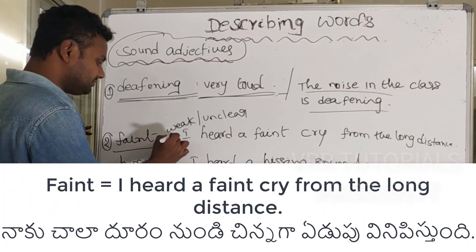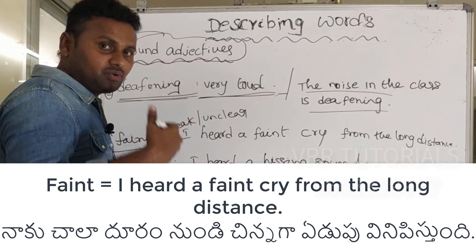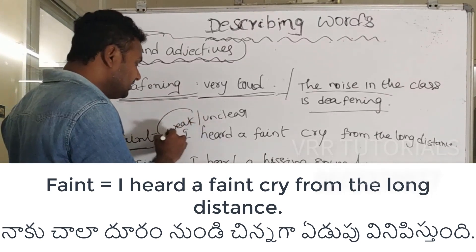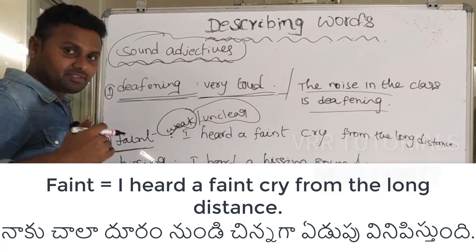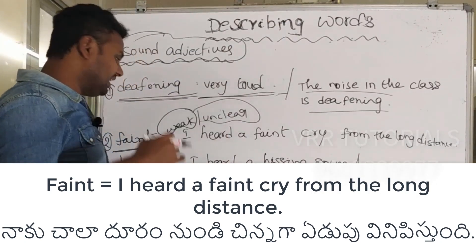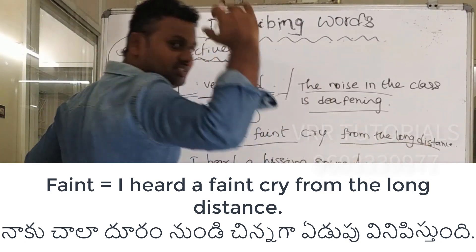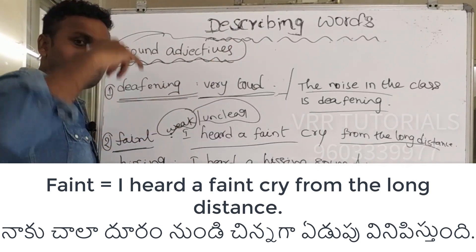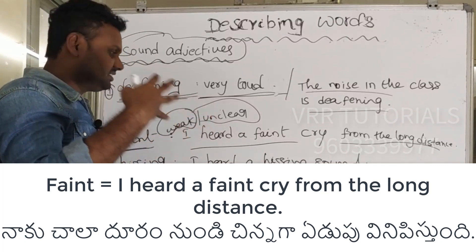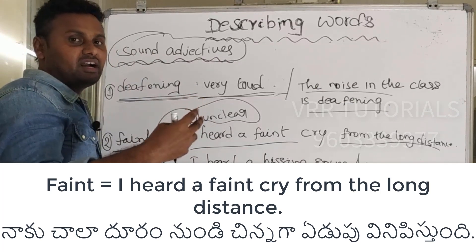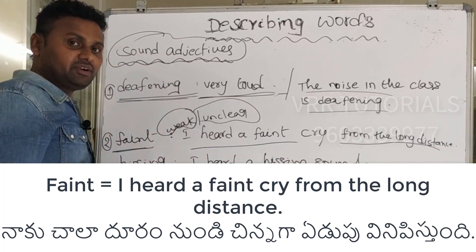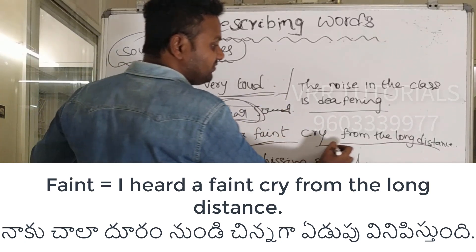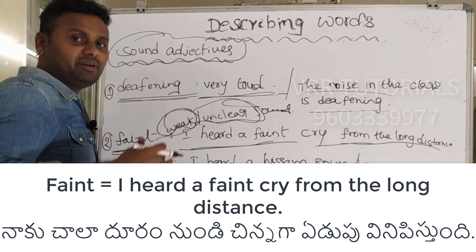The next one is 'faint.' Faint means a very weak sound or an unclear sound from a long distance. For example: I heard a faint cry from a long distance. Faint means very weak or unclear sound — I heard a faint cry from a long distance.